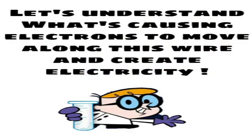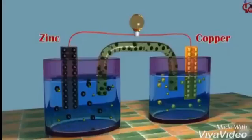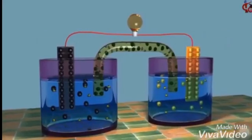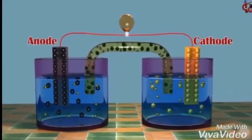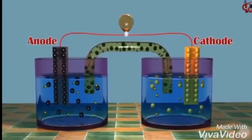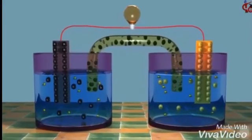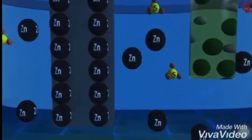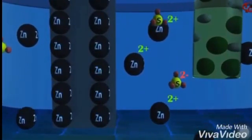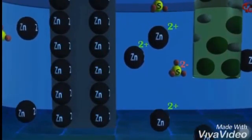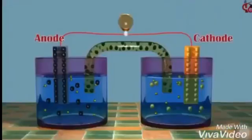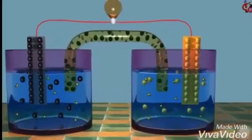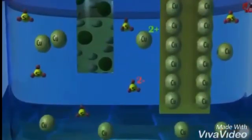Let's understand what's causing electrons to move along this wire and create electricity. A useful galvanic cell can be constructed by using zinc and copper. The anode is a zinc bar placed into a zinc sulfate solution, and the cathode is a copper bar placed into a copper sulfate solution.